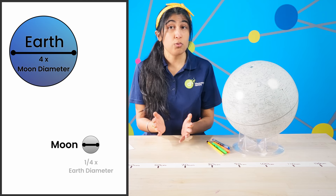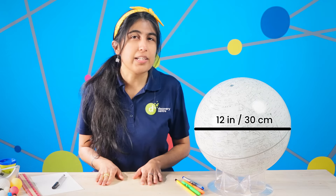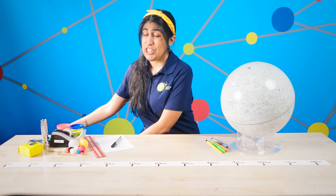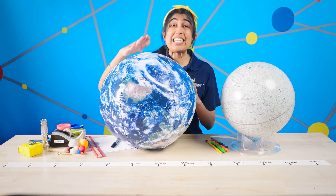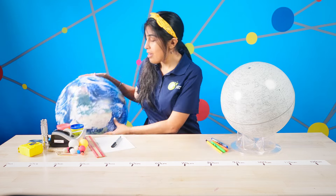Or we can say that the Moon is about a quarter the size of the Earth. If we use this Moon globe as my starting point, I know that it is 12 inches or about 30 centimeters in diameter. That means we need to find another ball that is four times wider to represent the Earth — or 48 inches, approximately 120 centimeters — just over the size of a one-meter stick. Unfortunately, this Earth globe is only 16 inches, so this won't work.